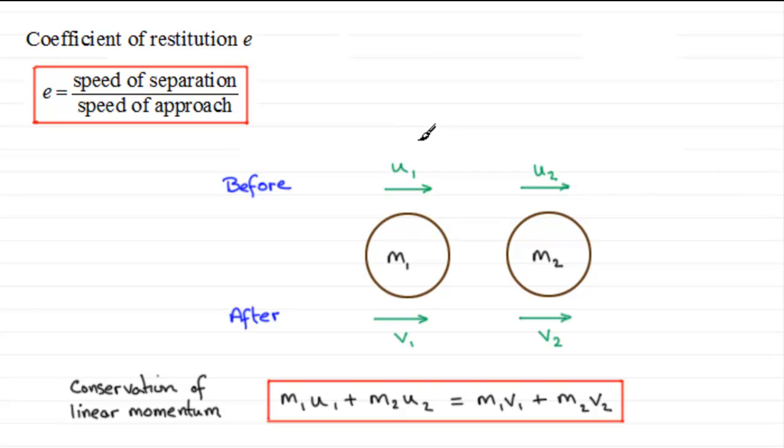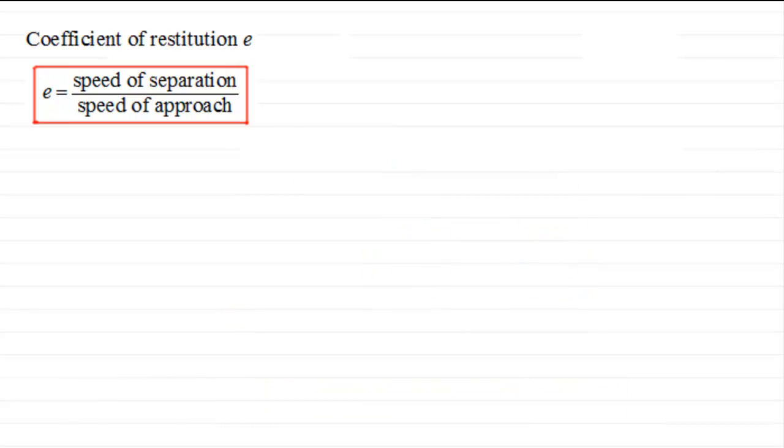But for now suppose we had two particles which were perfectly elastic. If the two particles are perfectly elastic, then e turns out to be one. Before they collide, let's suppose they're moving towards one another in opposite directions with a speed of v. After the impact, they would move in opposite directions to one another also with a speed of v.